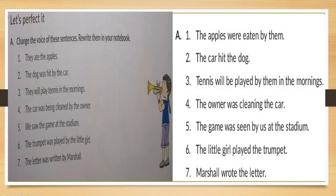Third: 'They will play tennis in the morning' — this is active voice. Convert to passive: 'Tennis will be played by them in the morning.' Fourth: 'The car was being cleaned by the owner' — this is passive voice. Convert to active: 'The owner was cleaning the car.' Because 'being' in passive corresponds to the '-ing' form in active. So 'being cleaned' becomes 'was cleaning.'